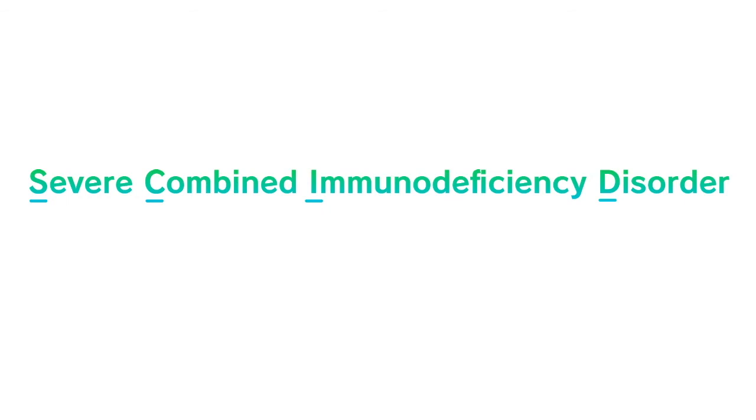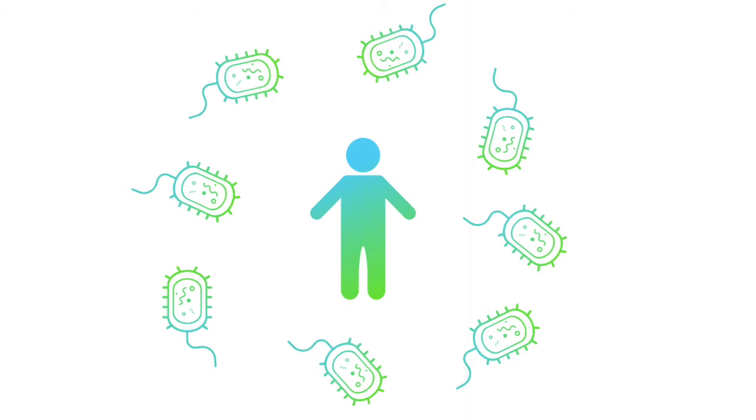For example, Severe Combined Immunodeficiency Disorder, or SCID, is a serious genetic disorder in which people are born without a functioning immune system. For children born with SCID, life is usually short and bleak as they cannot function in a non-sterile environment without falling ill.